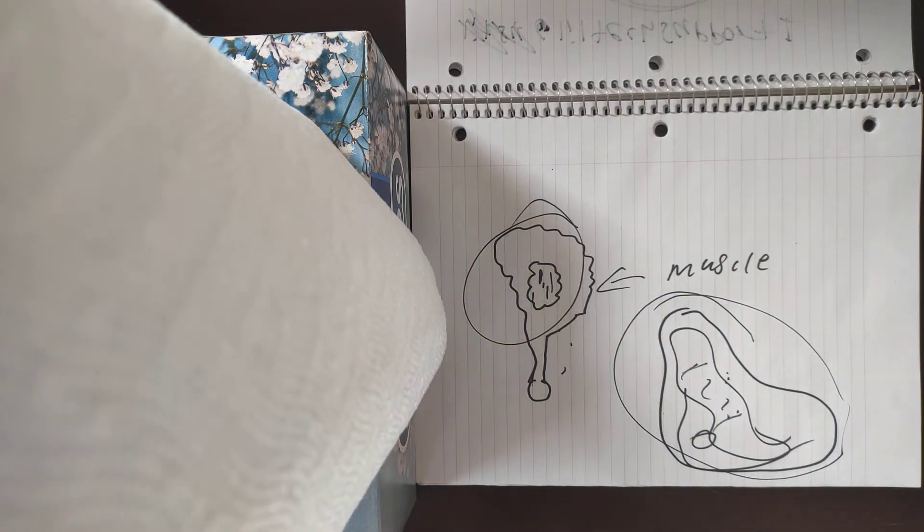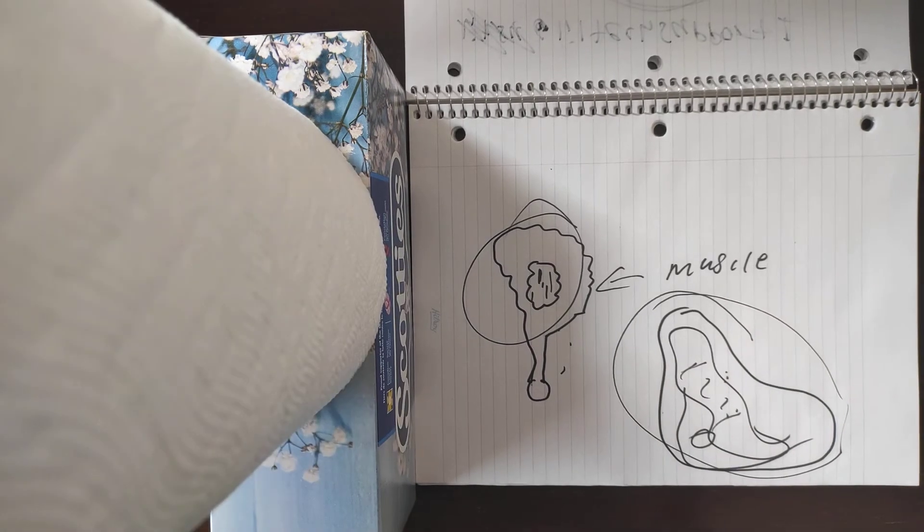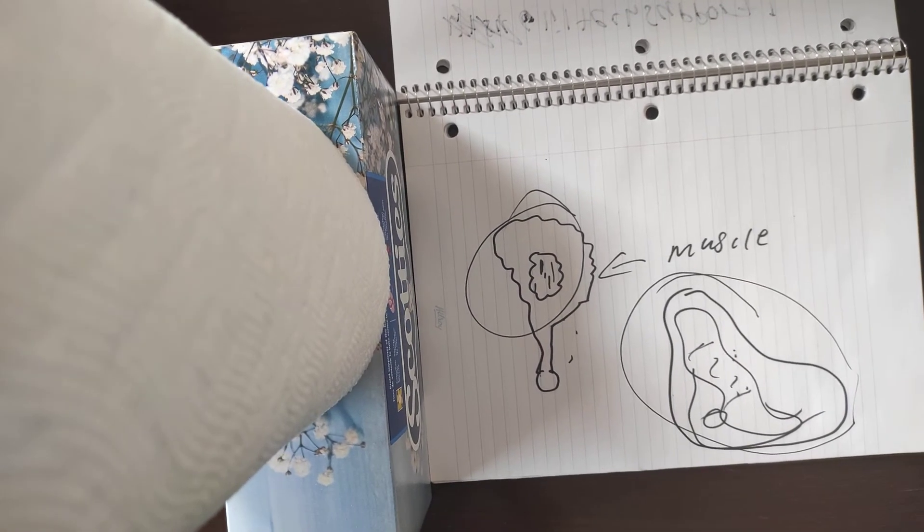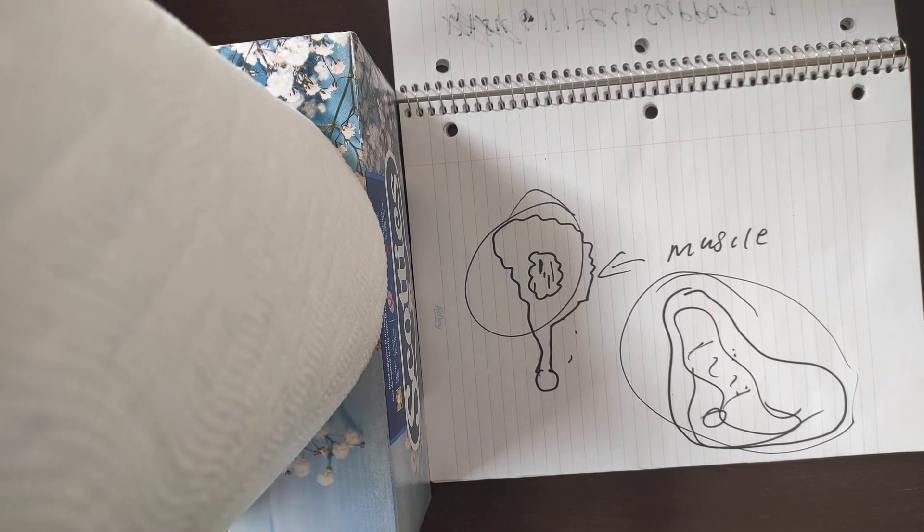So basically, if you bite into it and you see those little lines, not lines but like gaps in between, like you're gonna basically rip it apart because there's gaps in there. If you see those, that means it's muscle.